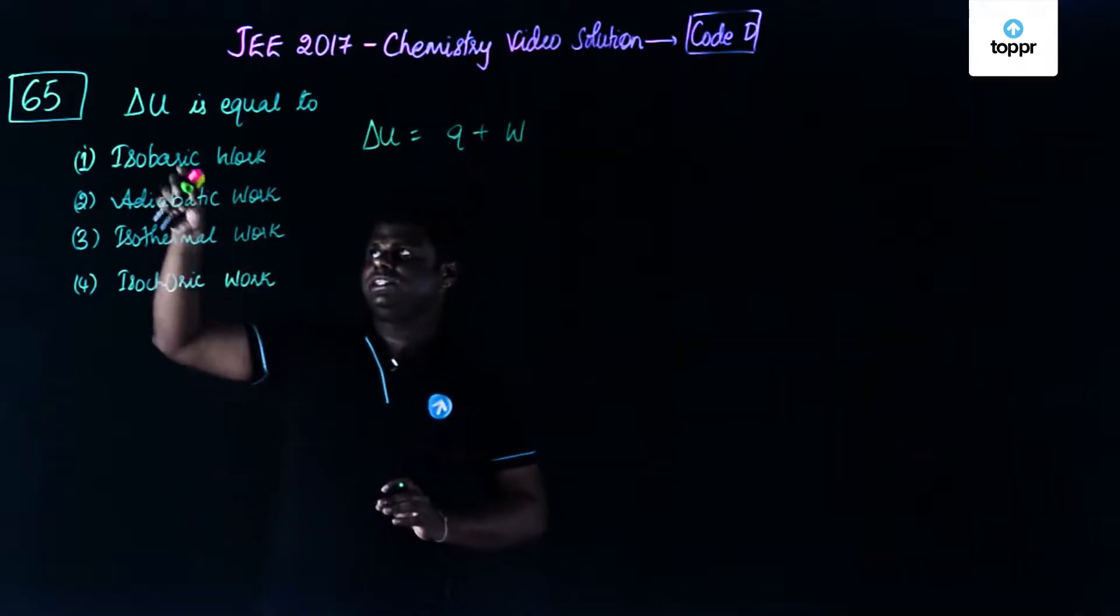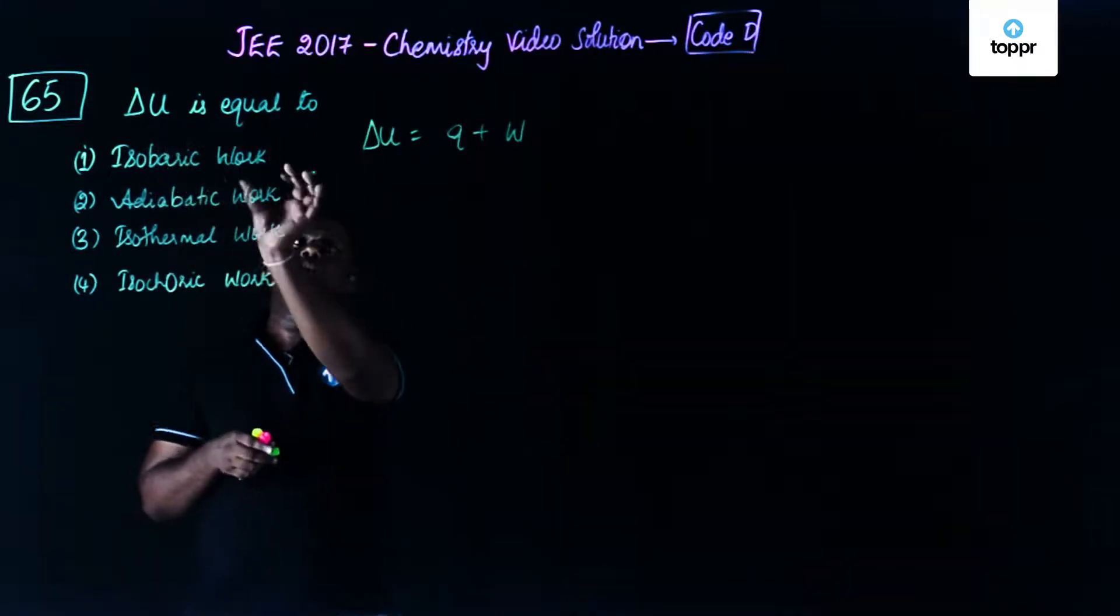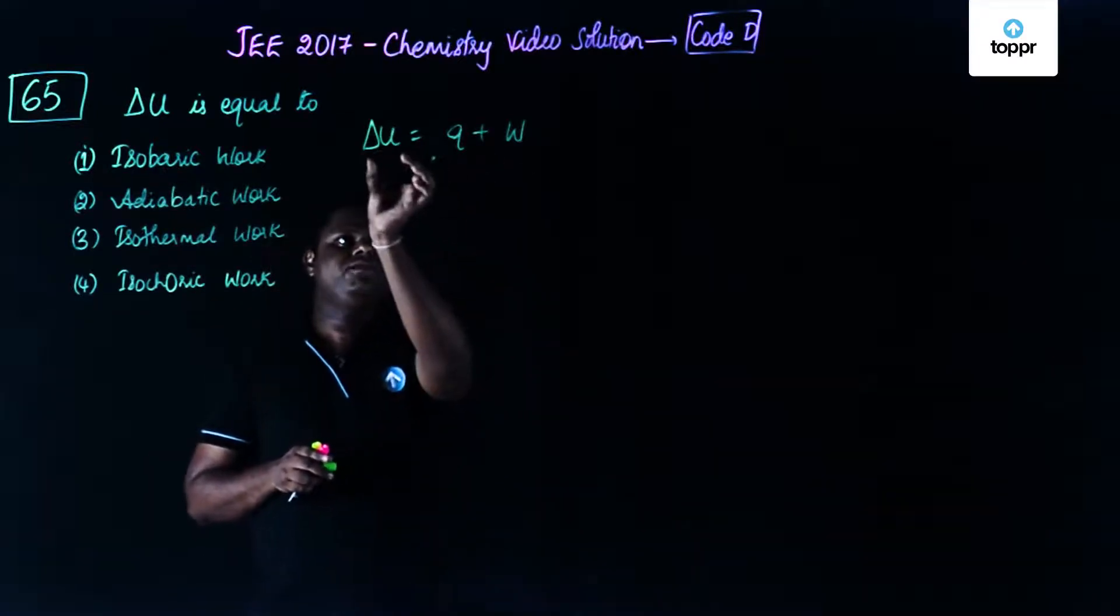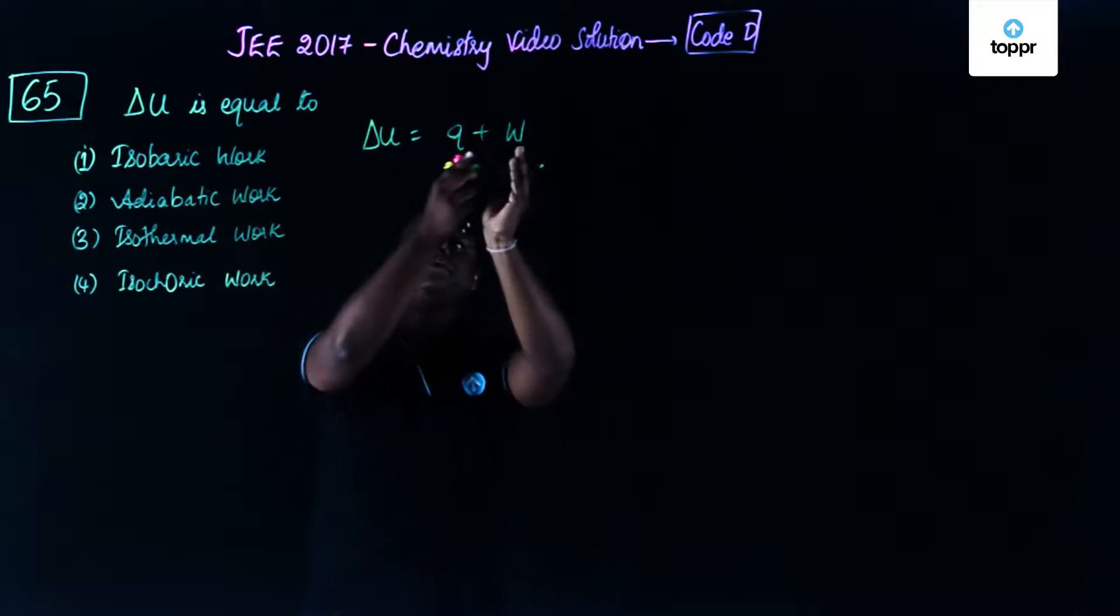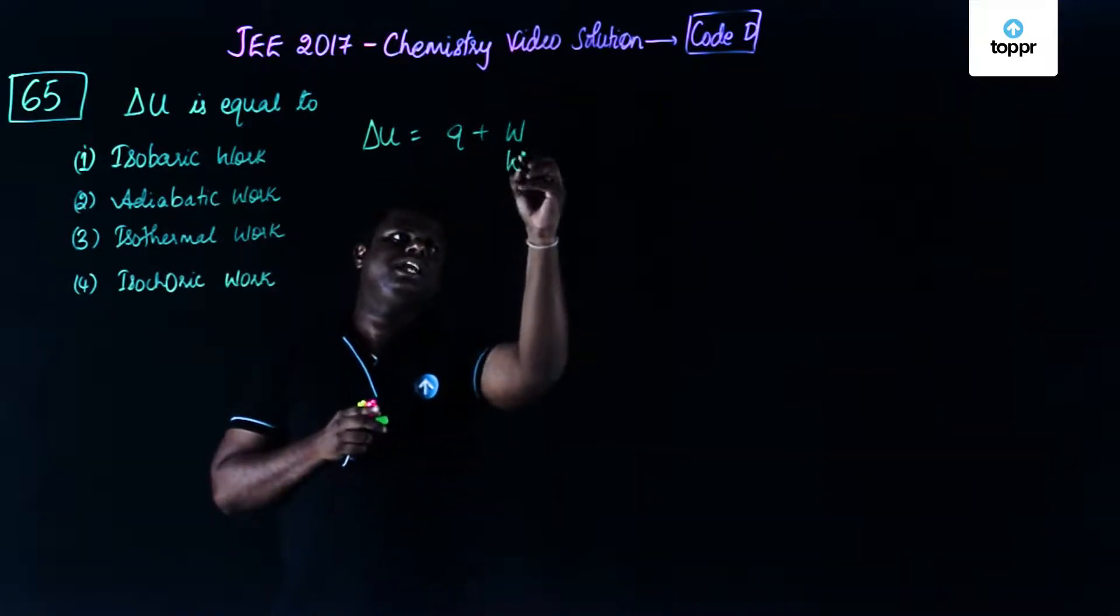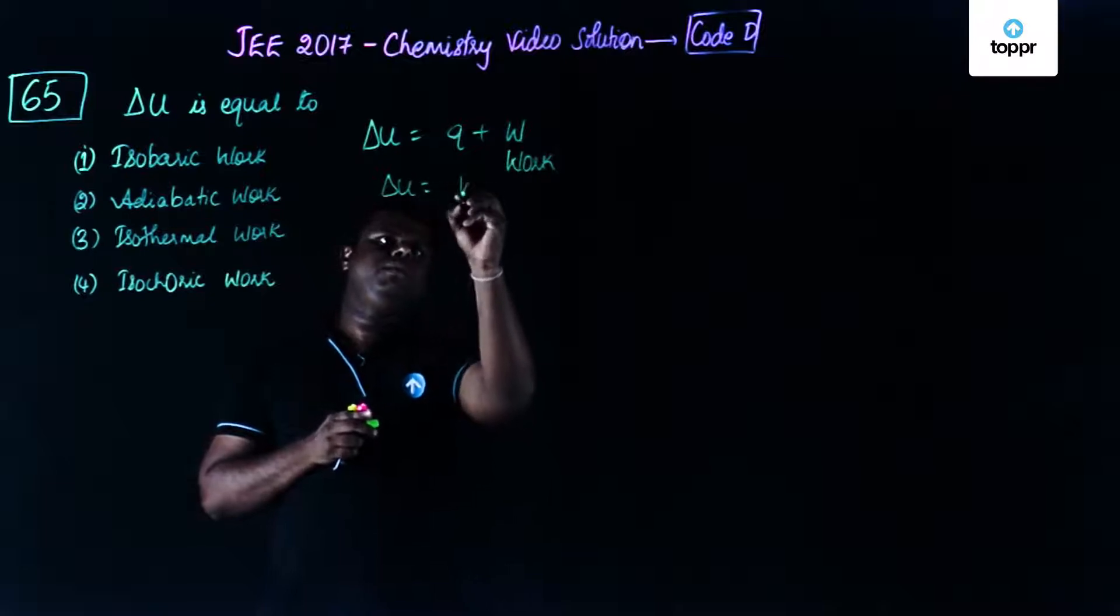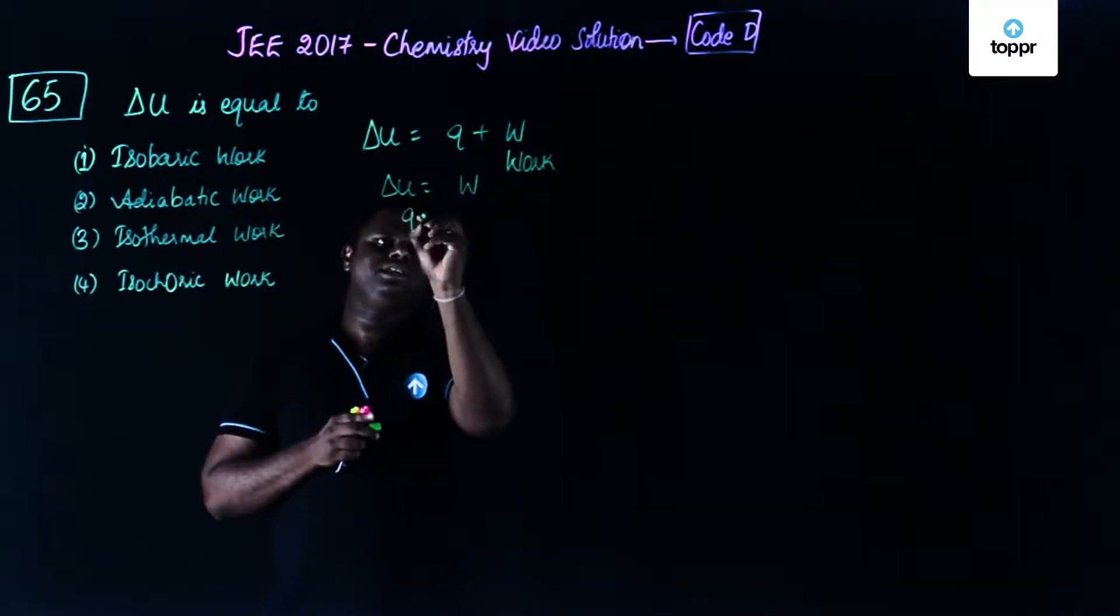That means it's saying that delta U should be equal to work. That means you should be able to correlate something wherein delta U should be equal to W. This is basically work. So delta U will be equal to W when Q is equal to 0.